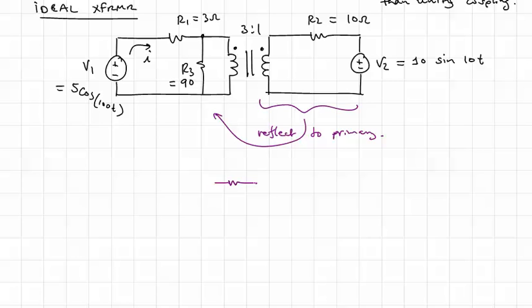So we'll have an R2, but it will actually be 3 squared times R2 equal to 90 ohms. And our voltage source, voltages and currents get scaled just by the turns ratio or 1 over the turns ratio.